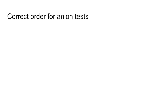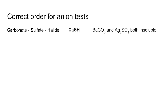There's a correct order for these anion tests: carbonate first, then sulphate, then halide. 'CASH' is a good way to remember the order. This is because barium carbonate and silver sulphate are both insoluble, so they can give precipitates and could produce a misleading result.